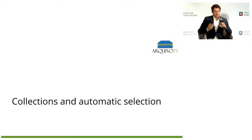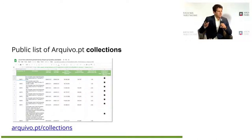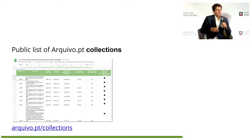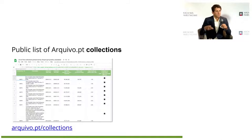Regarding collections and automatic selection of content: we decided not to create a manually curated catalog like libraries do, as we don't have the resources. Instead we decided to expose what we have. At kiv.pt/collections you get a spreadsheet with metadata about our collections — many are related to Portugal, but many others are of international interest.